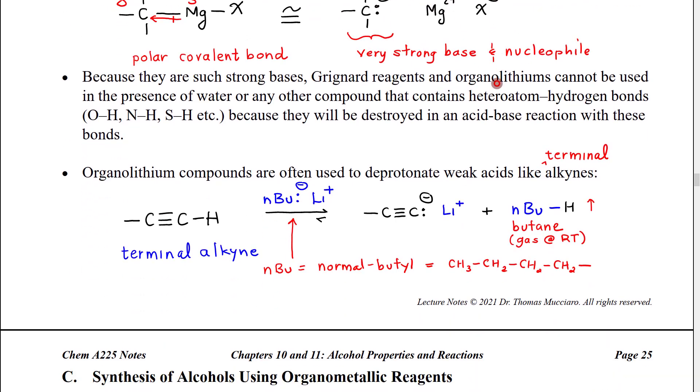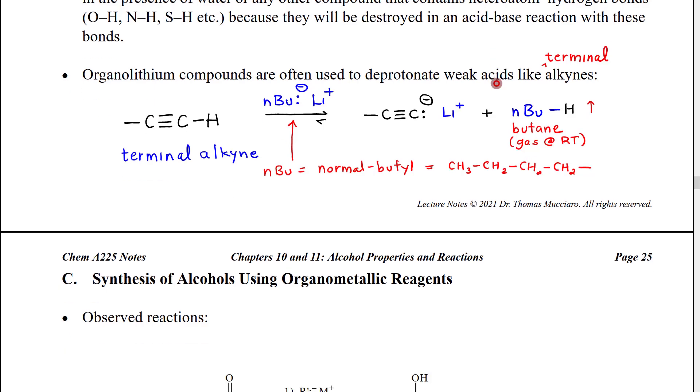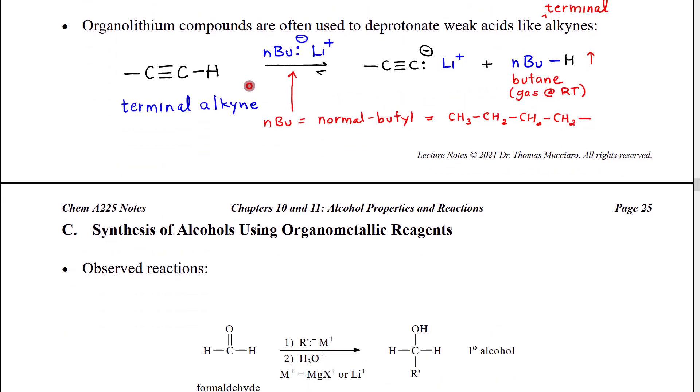We can, however, take advantage of this acidity by using organometallics like alkyl lithiums, Grignard reagents, to deprotonate weak acids, things like terminal alkynes. Terminal alkynes have a pKa of 25, which makes them acidic, much more acidic than an alkane, but not a super strong acid like water or sulfuric acid.